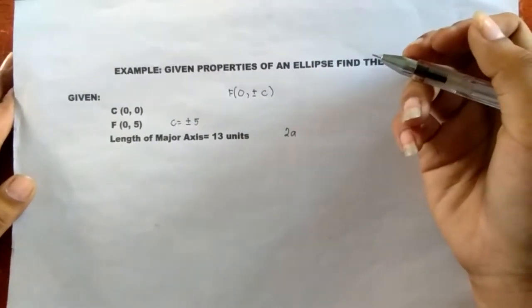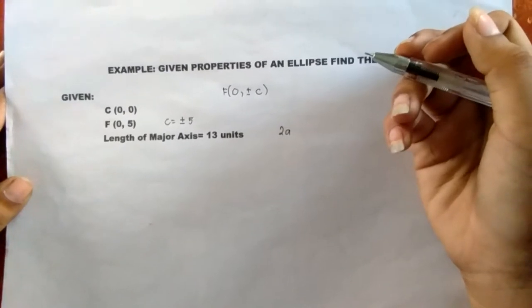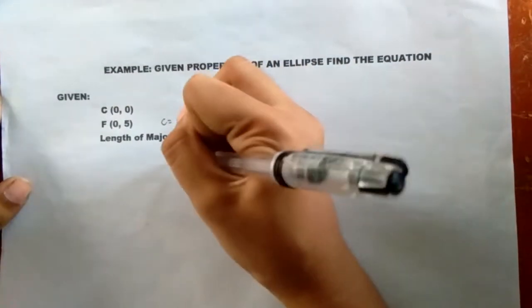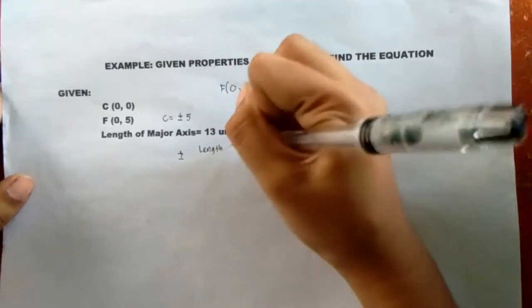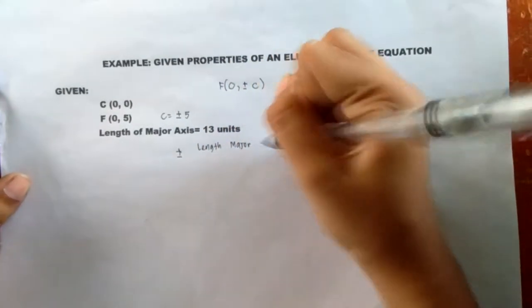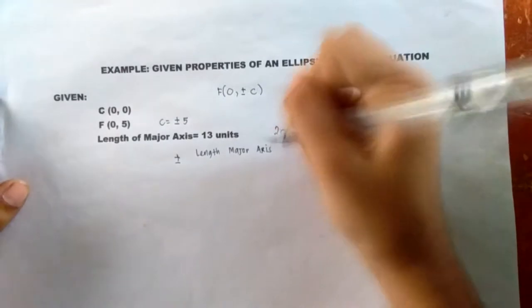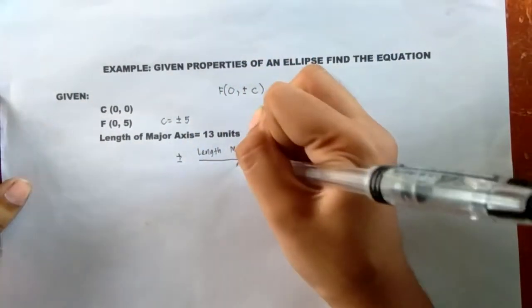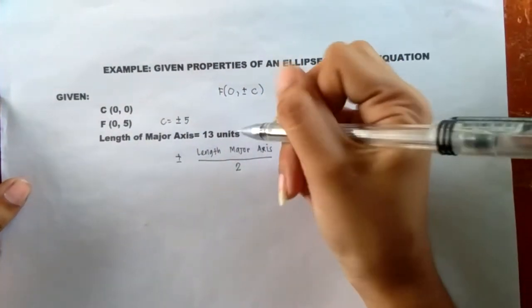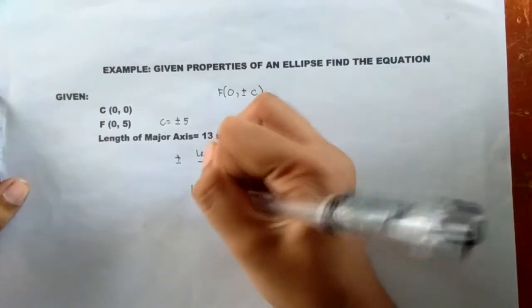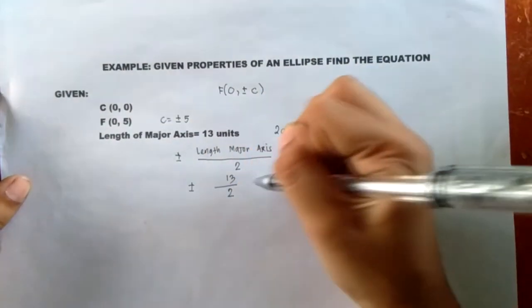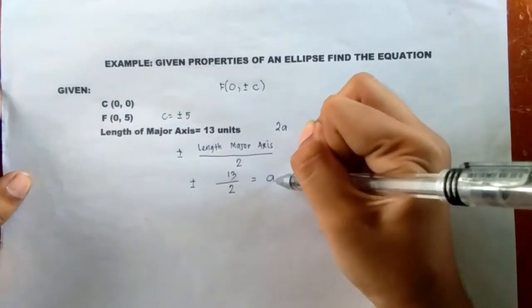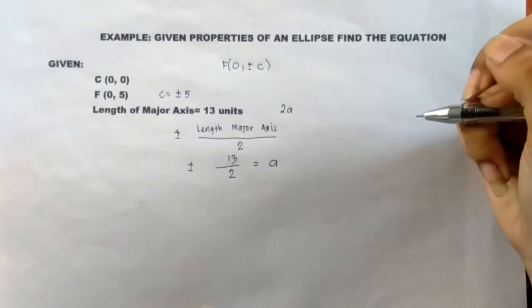So in finding the measurement of our a, we have to use the formula: ±(length of major axis) / 2. We have the length of our major axis, which is 13 units, so we have 13 over 2. And that is the length of our a.